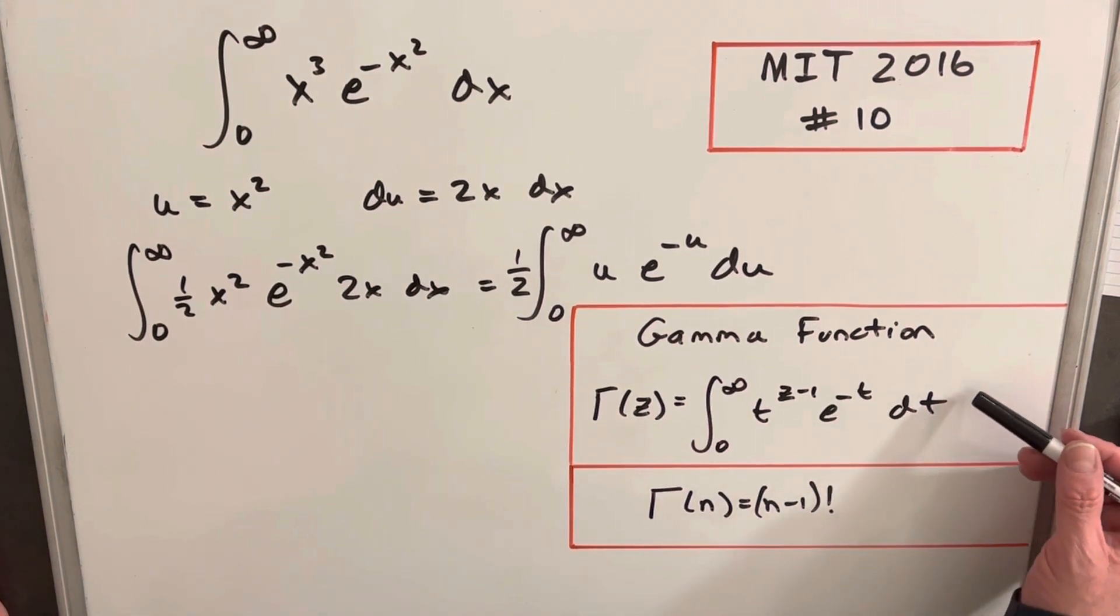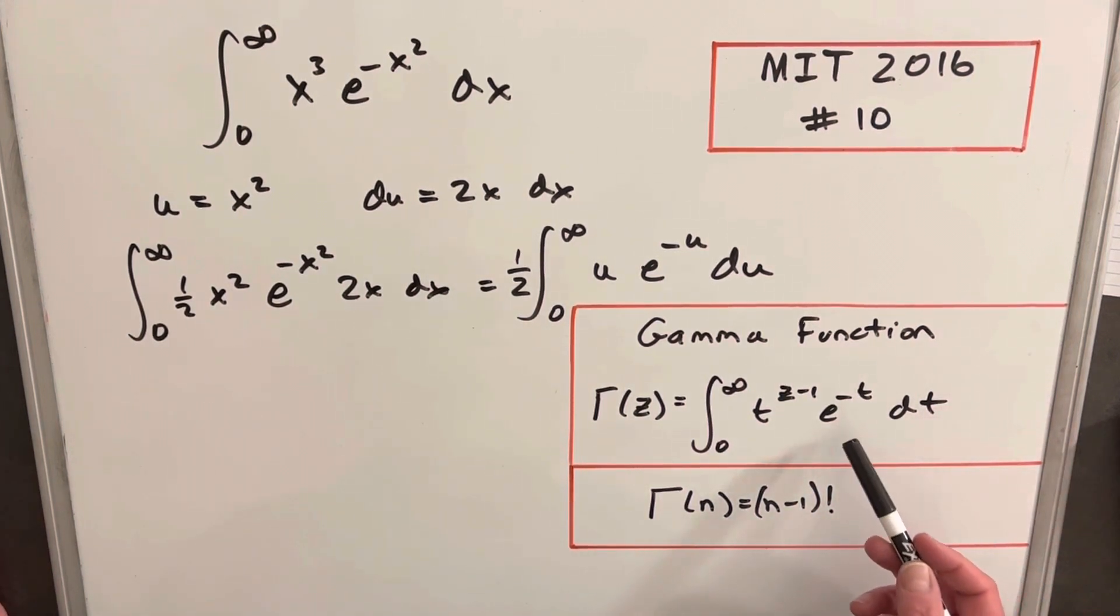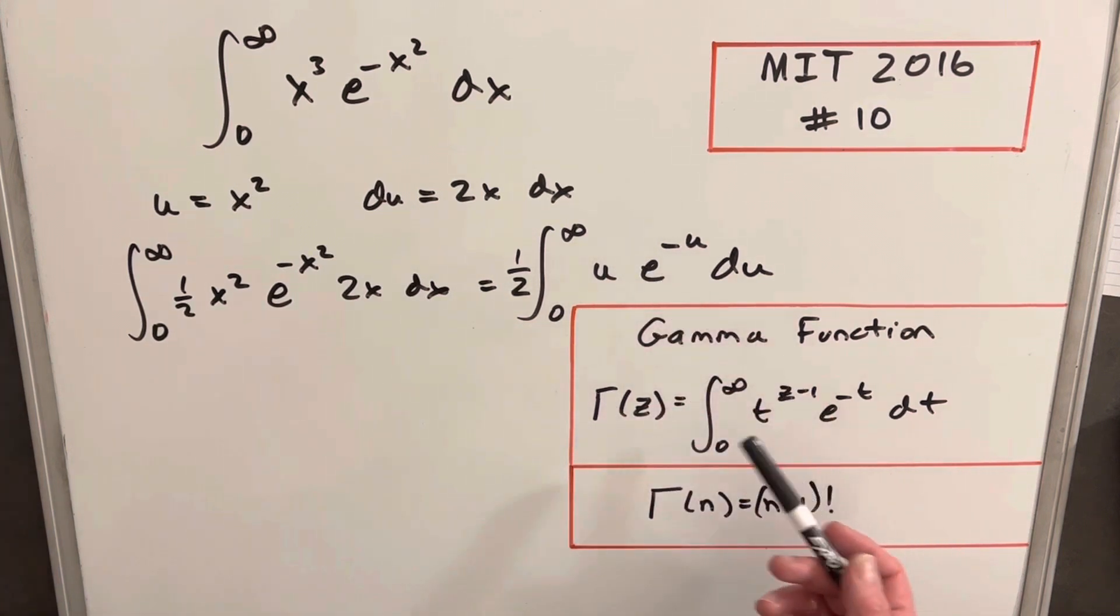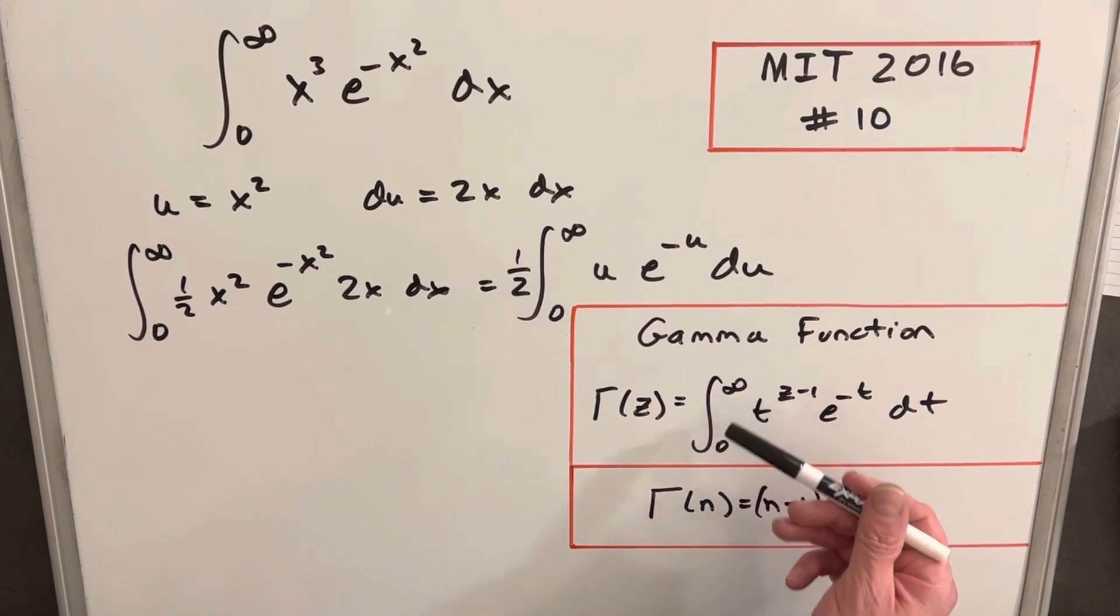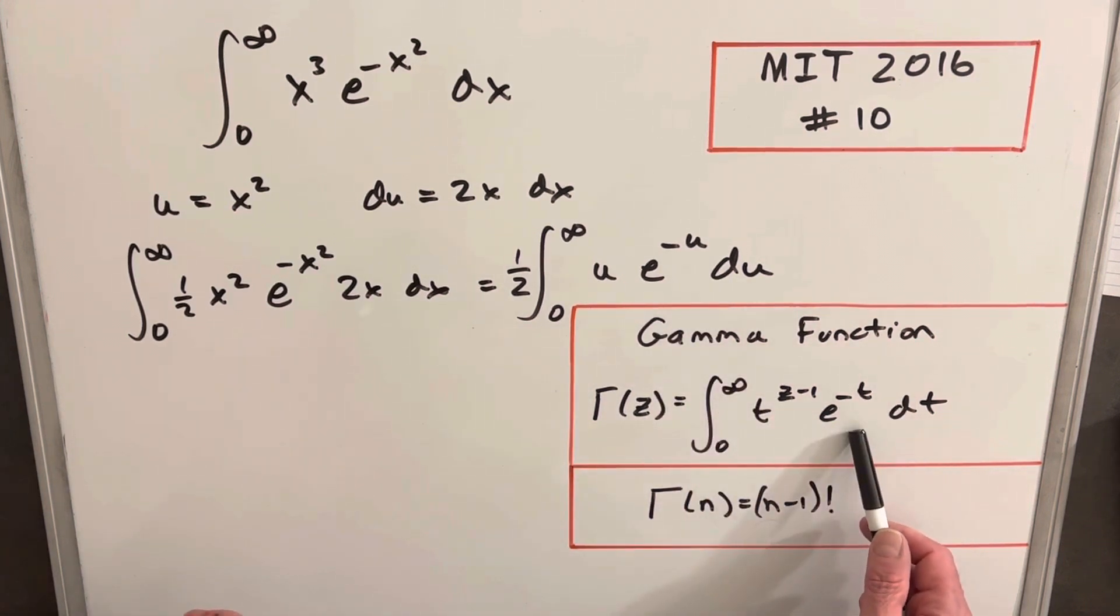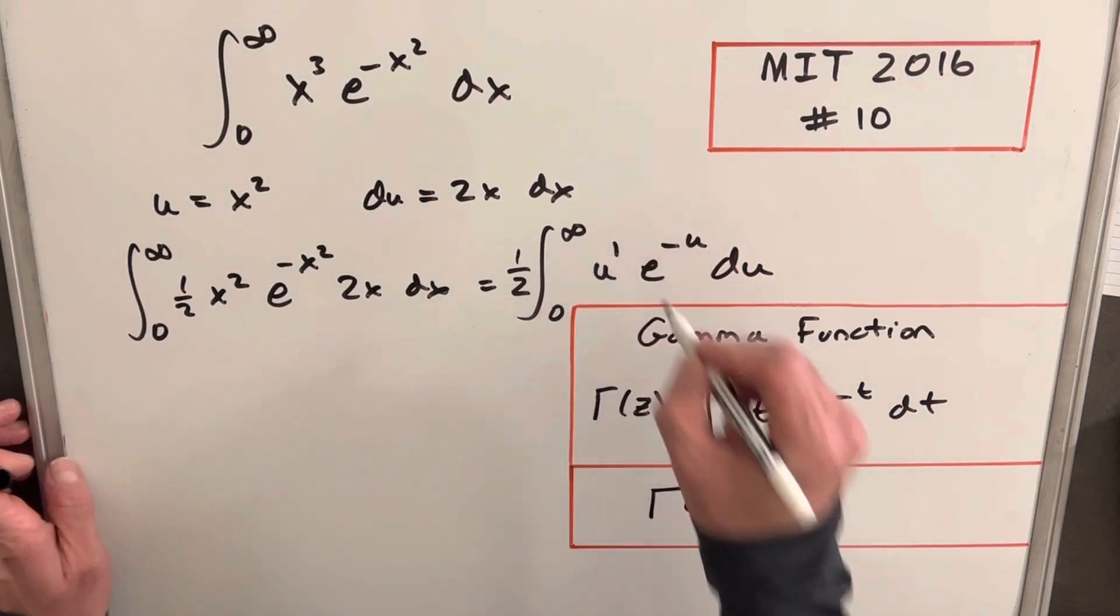So we have our definition of the gamma function over here on the right. You notice, so in this, the way we have this, the variable is t. The variable here is u, but it doesn't matter if it's a definite integral. We have the same limits, infinity to 0. This e to the minus u and e to the minus t is exactly the same here. What we want to deal with is this exponent on this t variable. Here on our u, we have a 1.